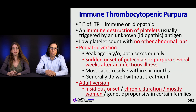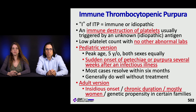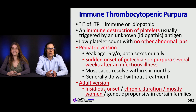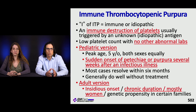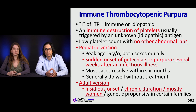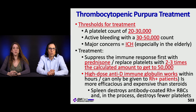ITP — immune thrombocytopenic purpura — is always immune and sometimes idiopathic. It's an immune destruction of platelets triggered by an unknown antigen, with a low platelet count and no other abnormal labs. You can't make this diagnosis until other cytopenias are excluded. The pediatric version peaks around age five, affects both sexes equally, and presents as sudden petechiae and purpura weeks after an infection — most cases resolve within six months without treatment. The adult version is insidious, chronic, and mostly affects women.